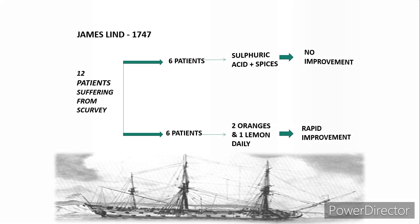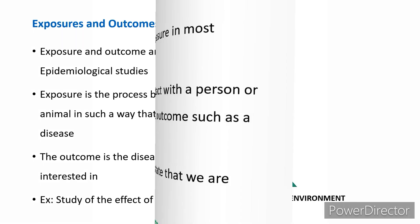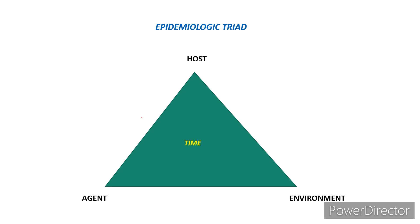Coming to two important terms in epidemiology — exposure and outcome. These are the two key elements we measure in most epidemiological studies. Exposure is the process by which an agent comes in contact with a person or animal in such a way that they may develop the relevant outcome such as the disease. The outcome is the disease, event, or health-related state of interest. For example, in a study of the effect of cigarette smoking on lung cancer, the exposure is cigarette smoking and the outcome is lung cancer.